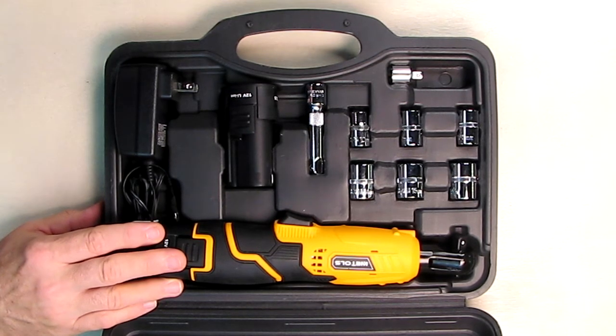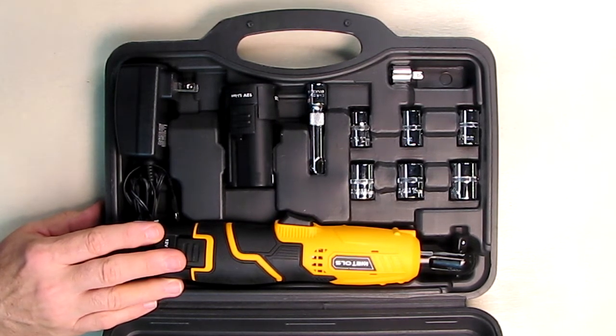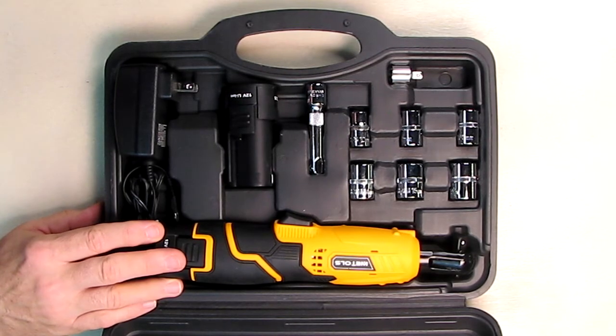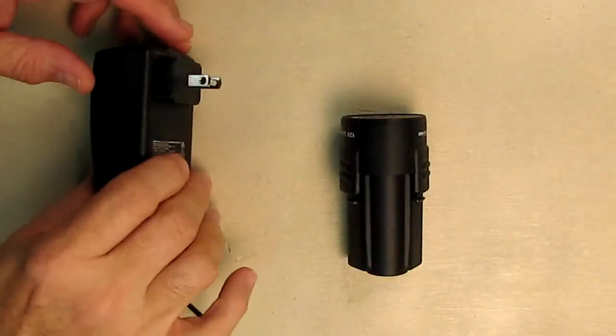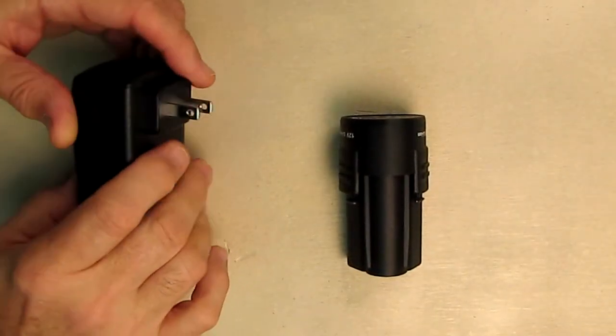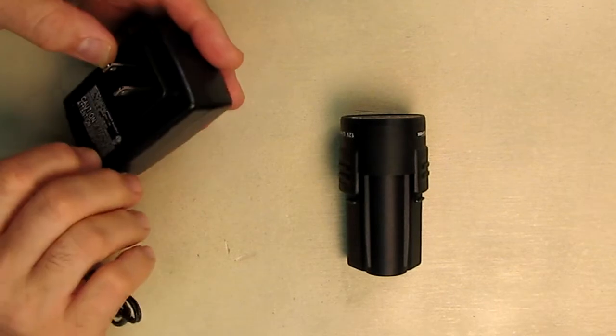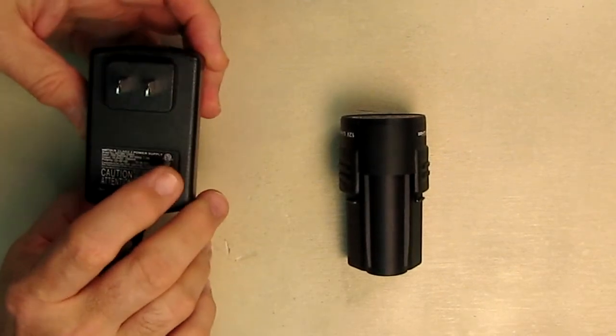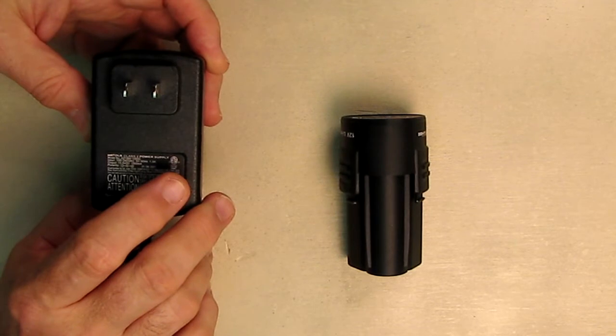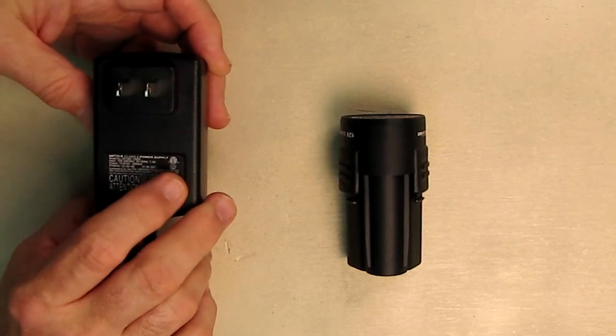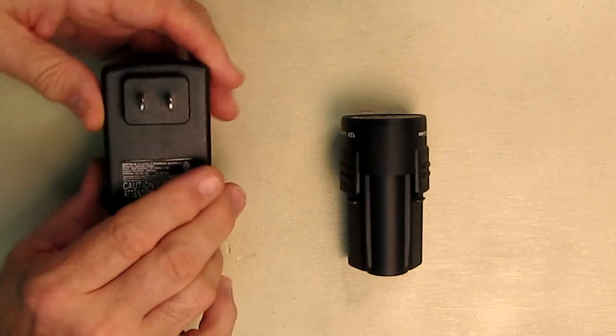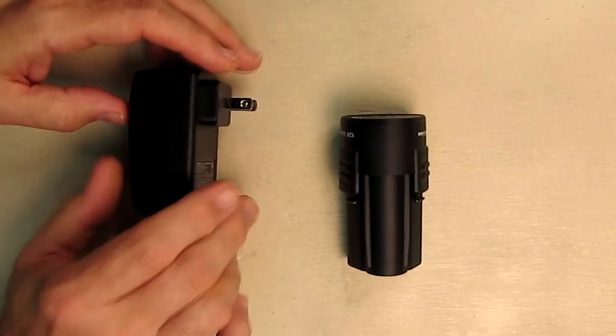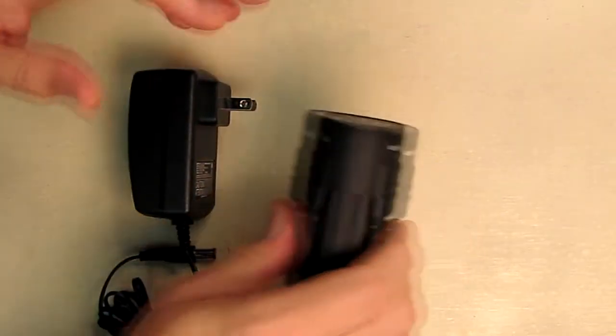The company is really responsive if you have any issues—just contact them on Amazon's messaging system and they will help you. Here's the charger with a US plug. This is ETL rated, and ETL has been around for over 100 years. They're actually more popular than UL in the United States; it's a division that started from Thomas Edison.